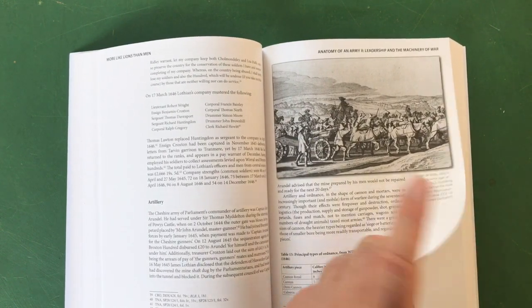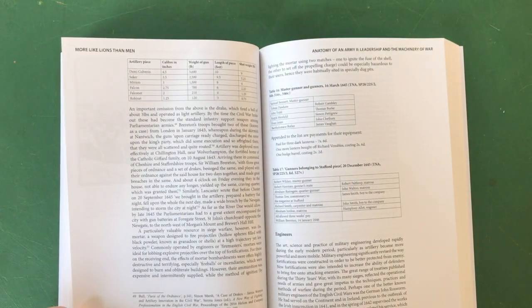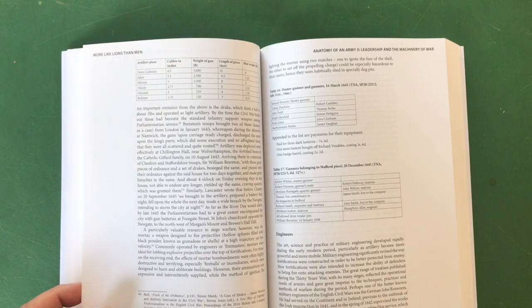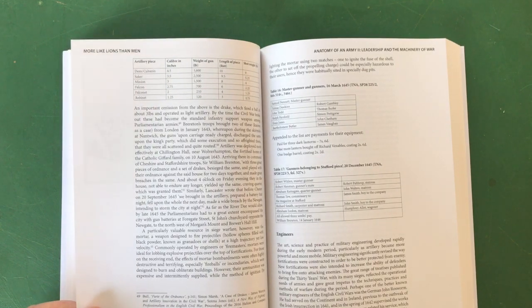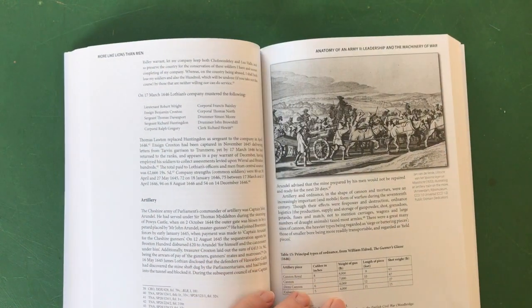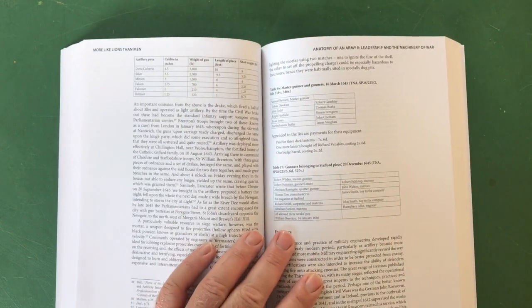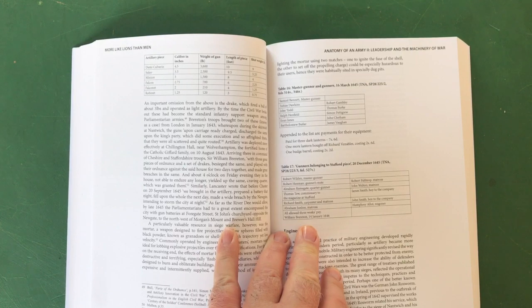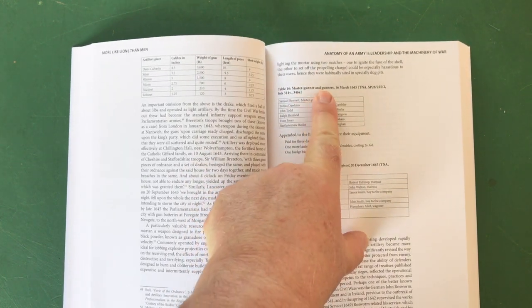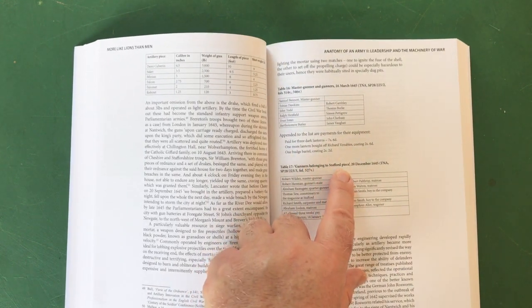Stuff about artillery. Nice engraving of artillery. The principal types of ordnance from The Gunner's Glass 1646: so the cannon royal, the cannon, the demi-cannon, the culverin, the demi-culverin, the saker, the minion, the falcon, the falconet and the robinet - tiny little robinet. The robinet had a ball weighing about three quarters of a pound, so something like 12 ounces, whereas the mighty cannon royal had a shot weighing 63 pounds. Obviously that's the kind of thing used for sieges.